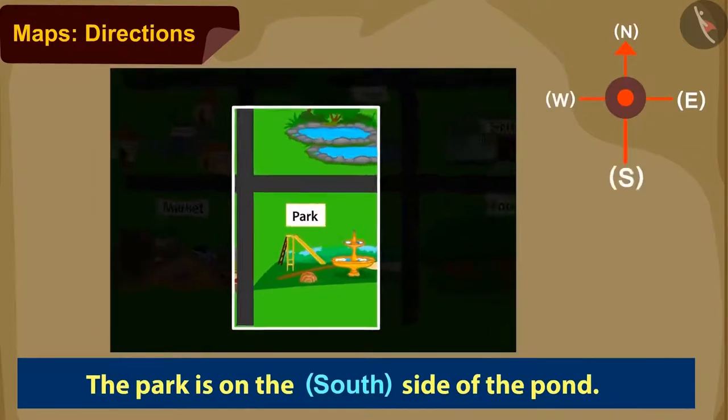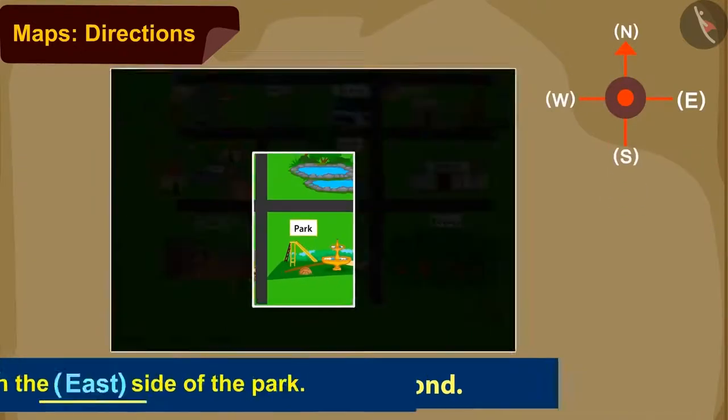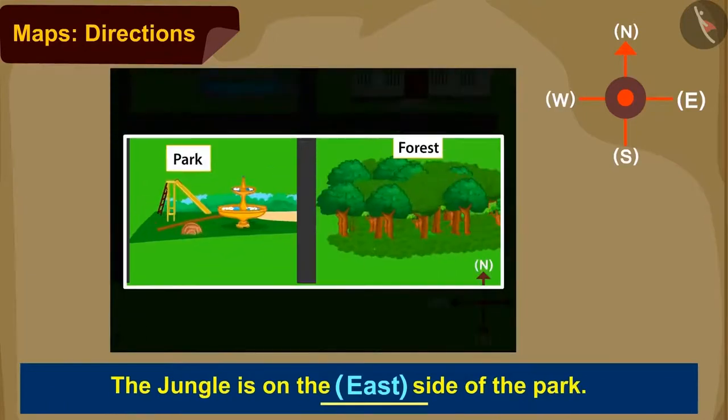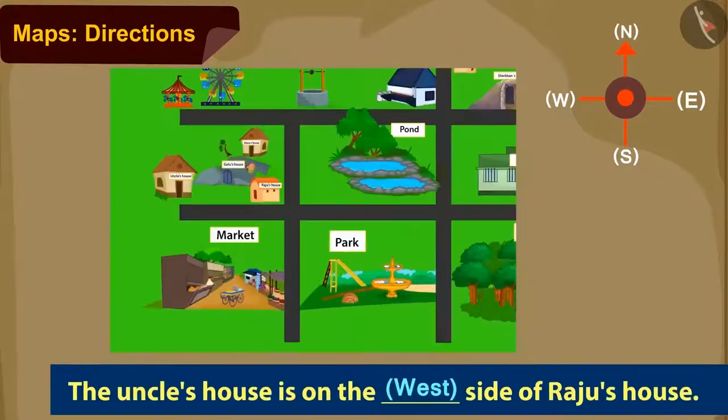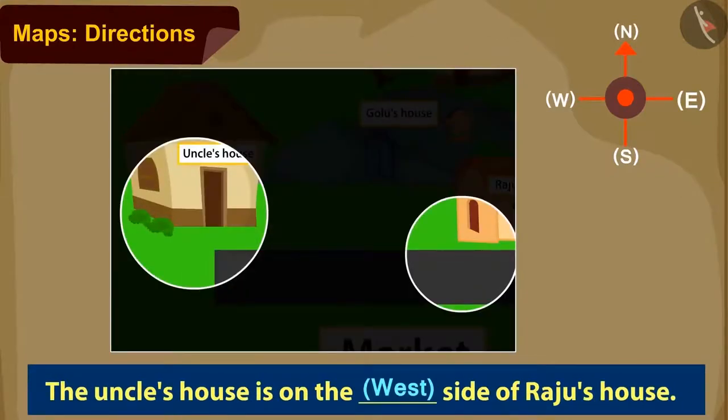Park is towards south of the pond. Jungle is towards east of the park. Park is in the north of Raju's house. And Uncle's house is on the west of Raju's house.